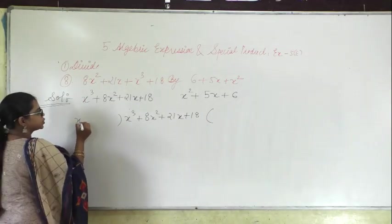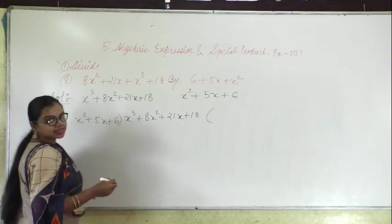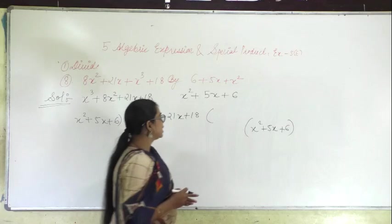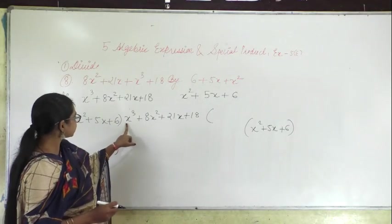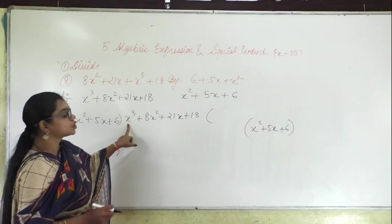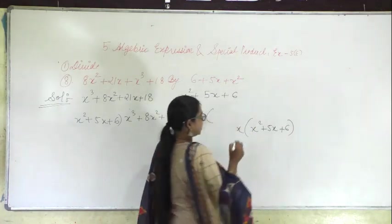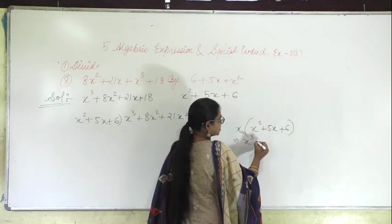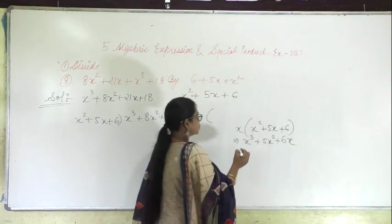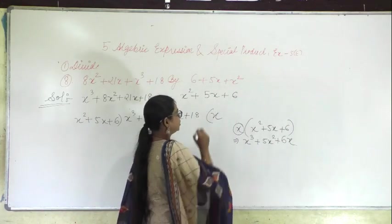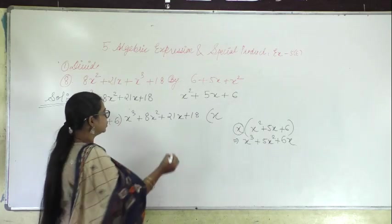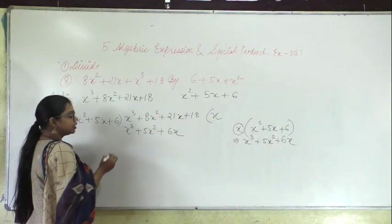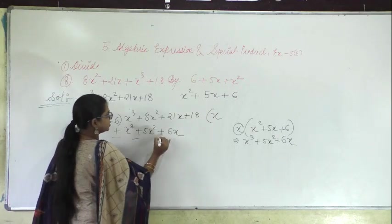You have to divide x cubed plus 8x squared plus 21x plus 18 by x squared plus 5x plus 6. By which number will you multiply to get x cubed? Multiply by x: x into x squared is x cubed plus 5x squared plus 6x. So the quotient is x. Write down x cubed plus 5x squared plus 6x, then change the sign — all become minus.